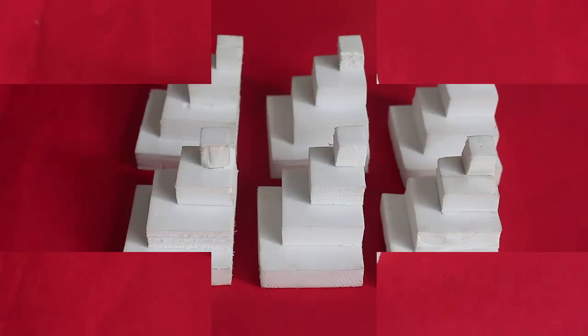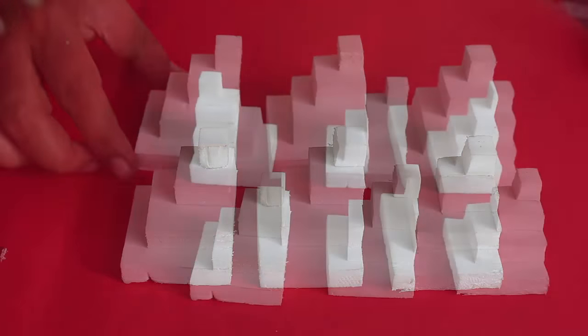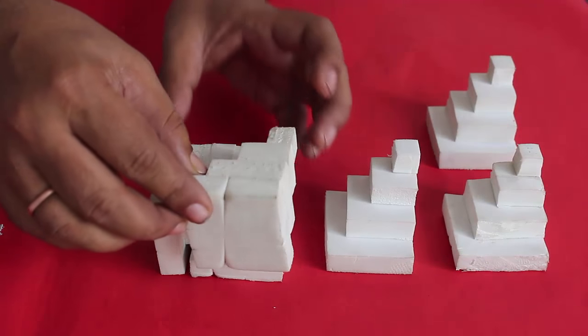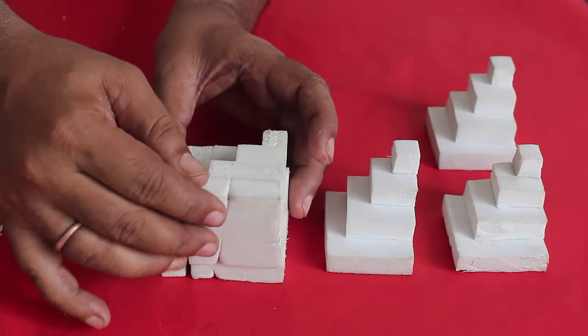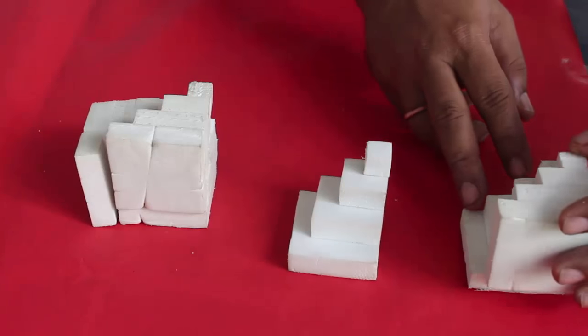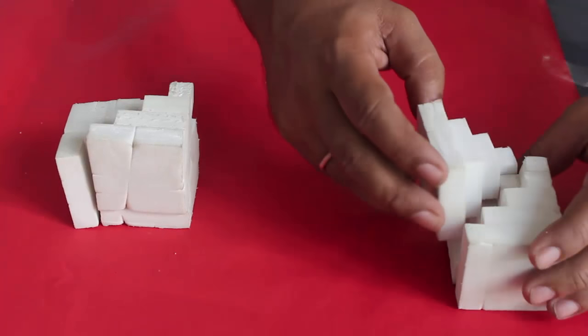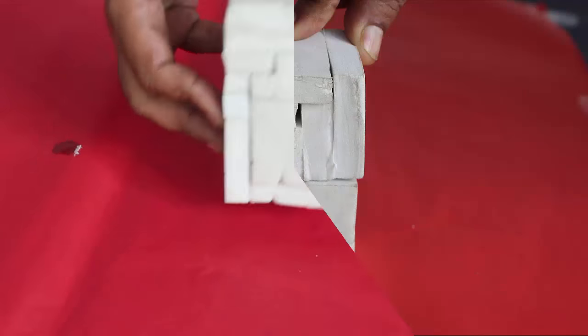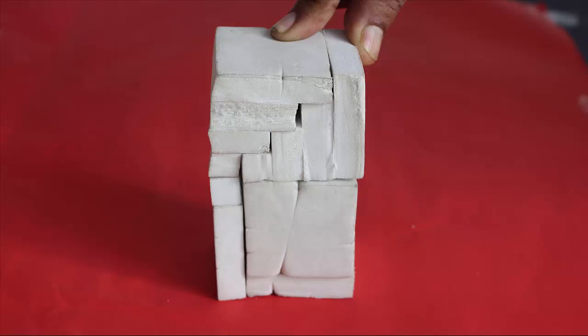We will now join 6 of these pieces to make a cuboid. We will take 3 of these pieces to make this cube with some part protruding out. We will make a similar piece with 3 other pieces. Now we will place one over the other and this makes a wonderful cuboid. This can also be a very nice puzzle of joining these 6 pieces into a cuboid.